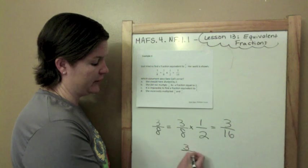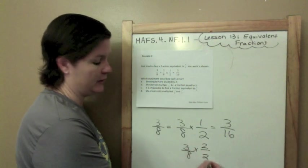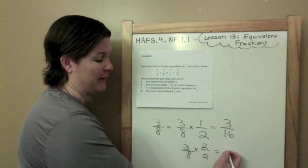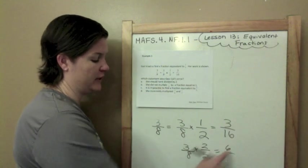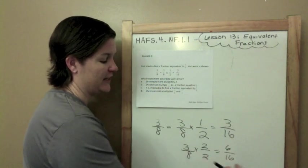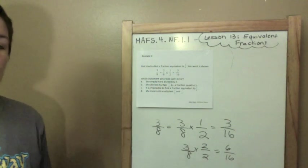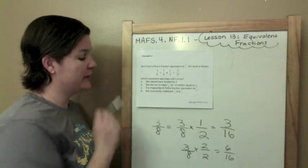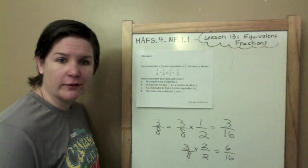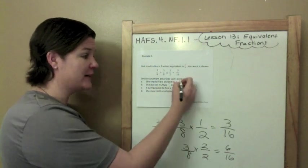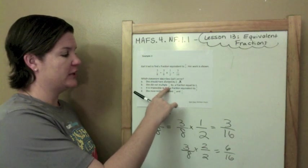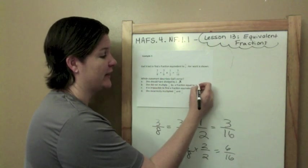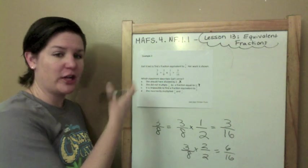You need a fraction equal to 1. So what she should have done is multiplied by a fraction like this, because that is equivalent to 1. 2 divided by 2 is 1, which would have given her a completely different answer because 3 times 2 equals 6, 8 times 2 equals 16. That would be a fraction equivalent to 3 eighths. Okay, so which statement describes Gail's error? She should have divided by 2. Did we do any division here? No, we did not. She did not multiply 3 eighths by a fraction equal to 1. Ding, ding, ding. She didn't do that. That's what messed her up. So I'm going to put a question mark there, but I'm going to check the rest just to make sure.